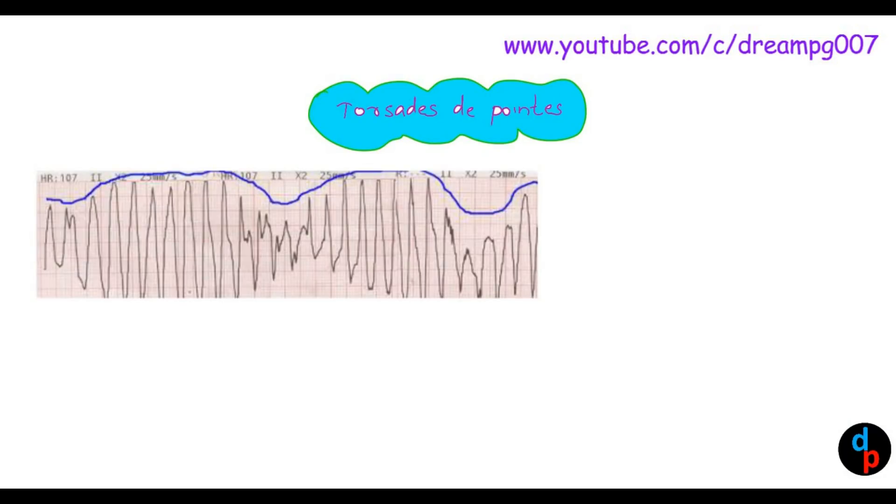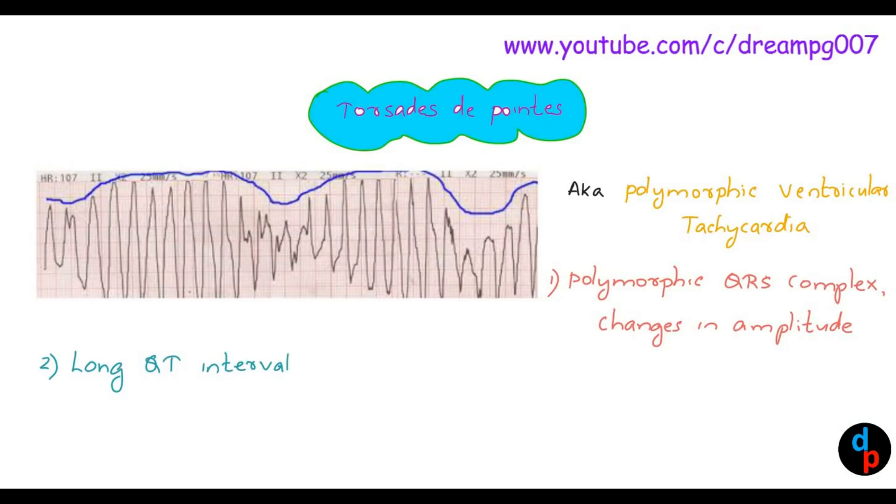Let's look into some important points of torsades de pointes. Torsades de pointes is also called polymorphic ventricular tachycardia. What are the characteristic features? It includes a polymorphic QRS complex which changes in amplitude, and we have a long QT interval. Also, this ECG form has an oscillating appearance.